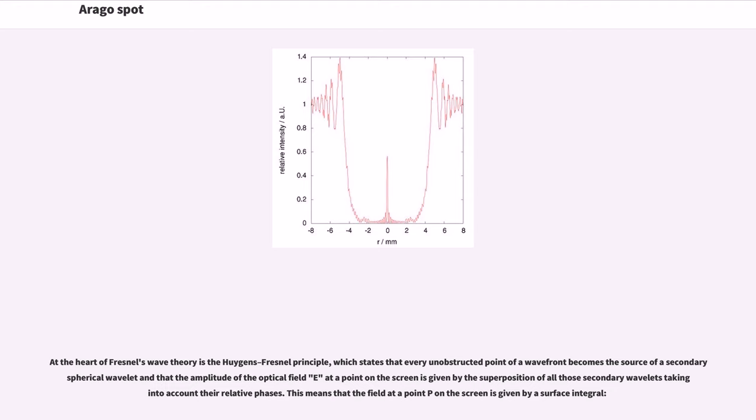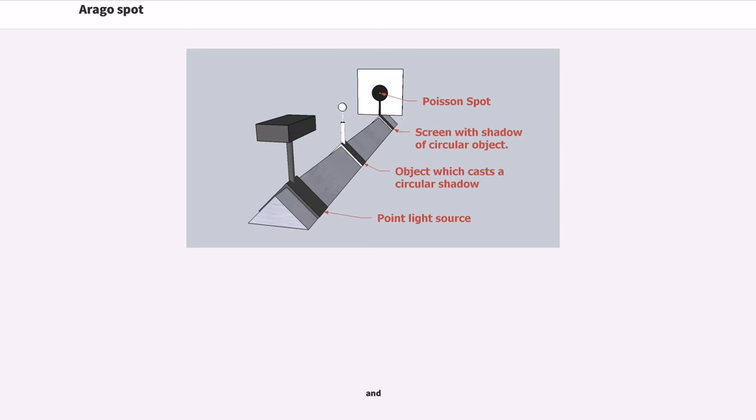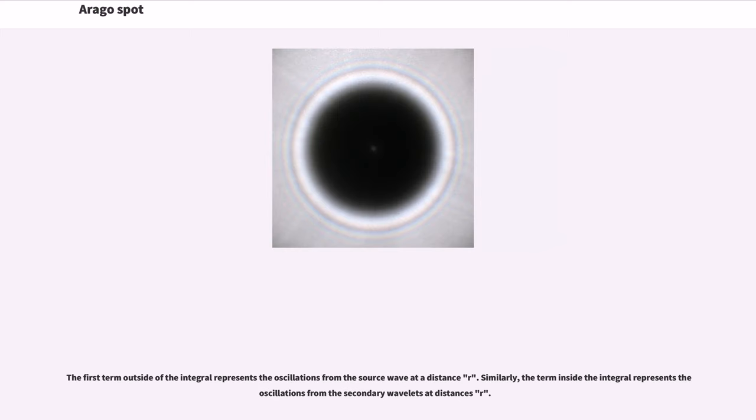This means that the field at a point P on the screen is given by a surface integral, where the inclination factor, which ensures that the secondary wavelets do not propagate backwards, is given by a certain formula, and the first term outside of the integral represents the oscillations from the source wave at a distance r. Similarly, the term inside the integral represents the oscillations from the secondary wavelets at distances r.